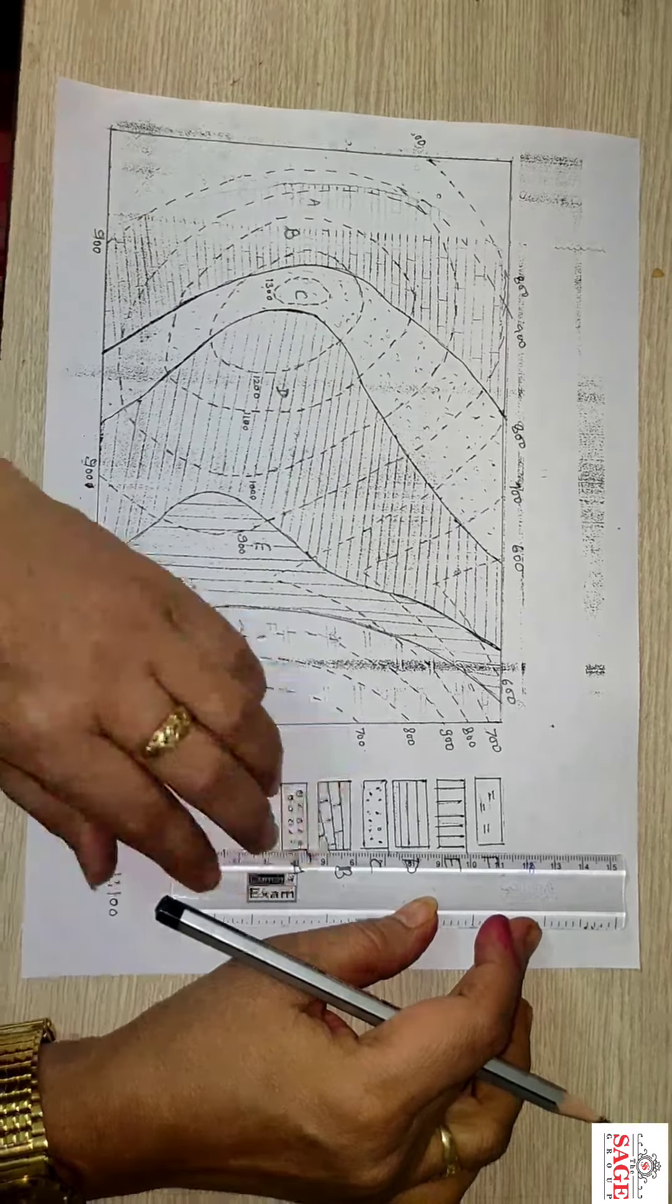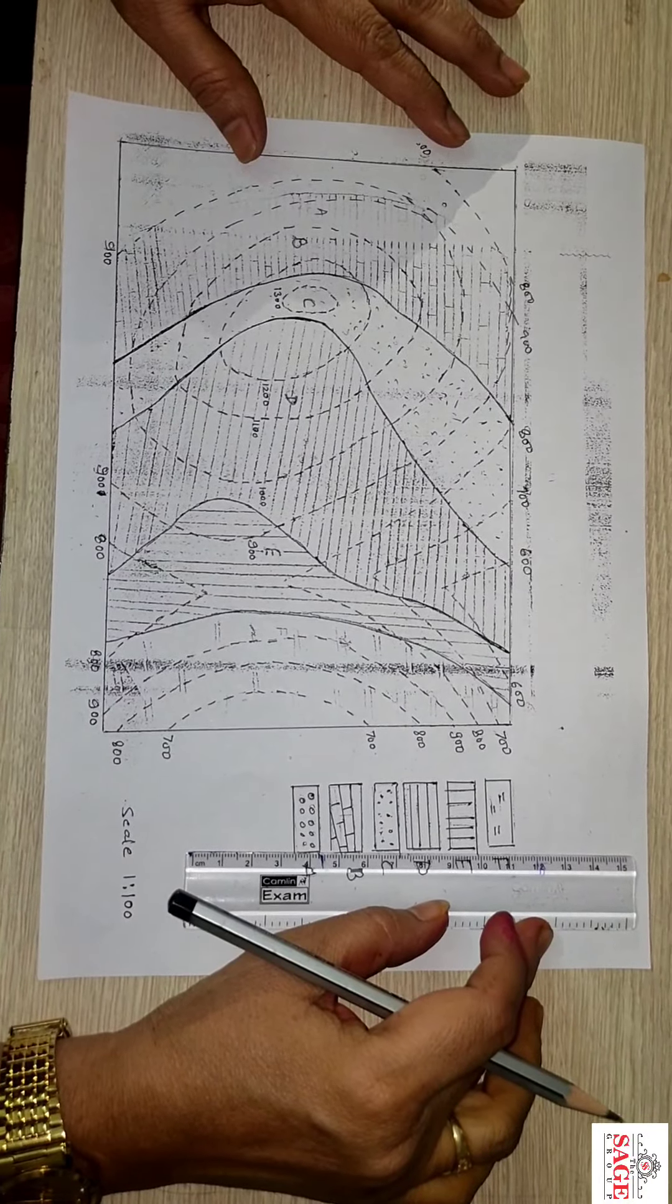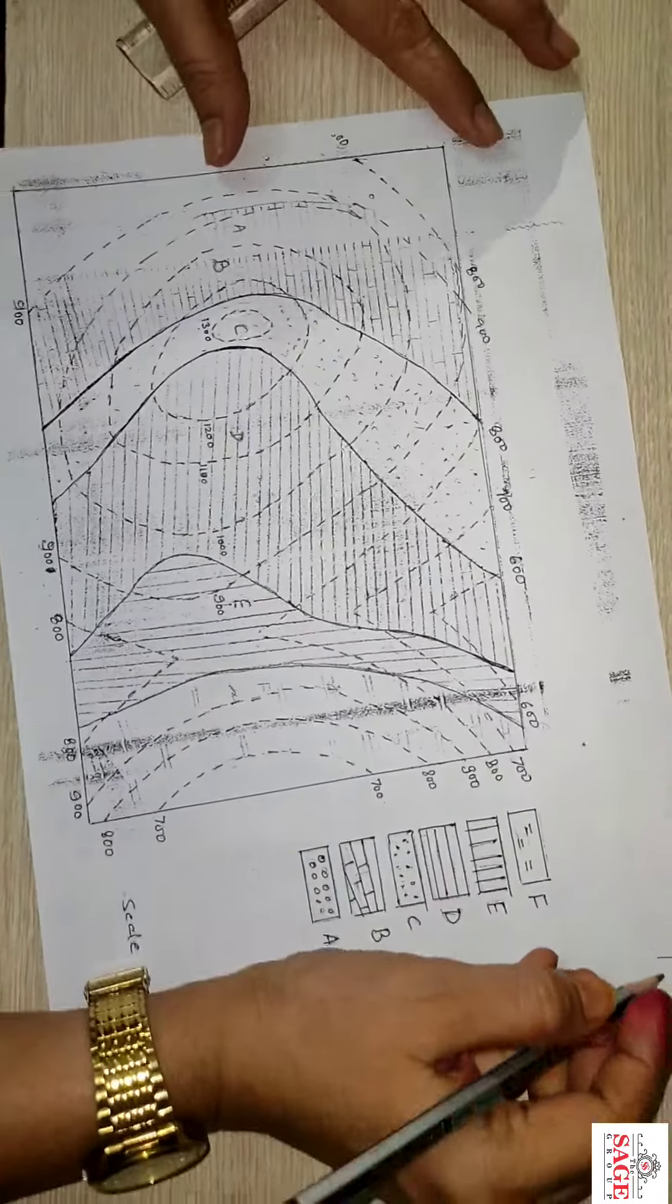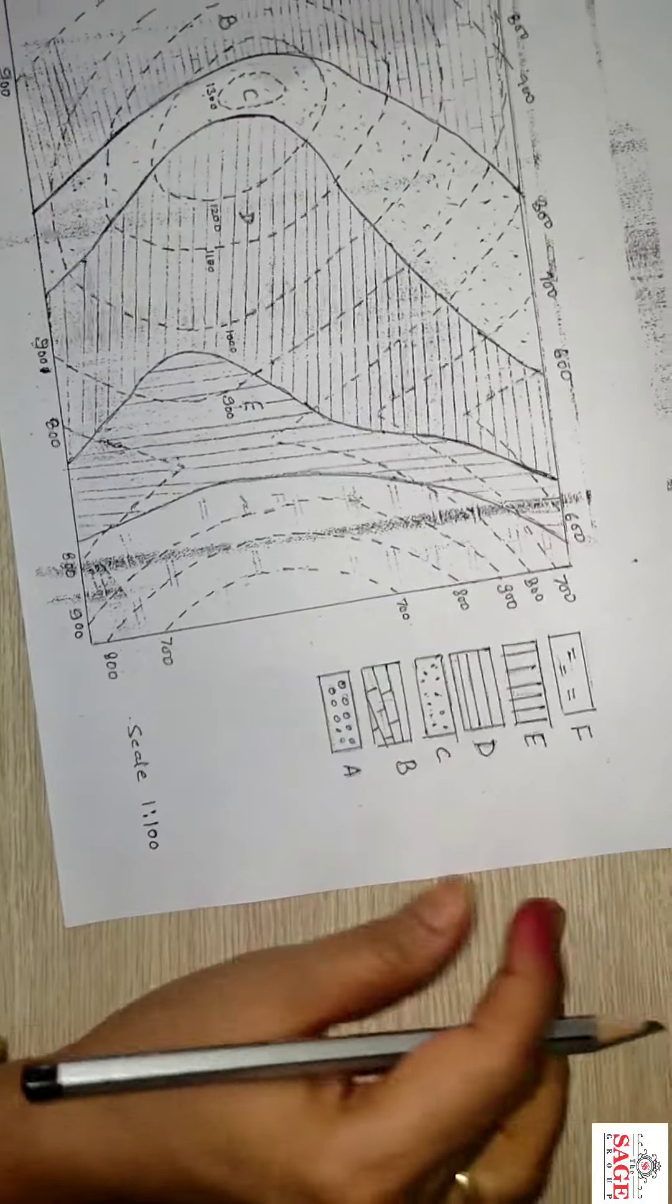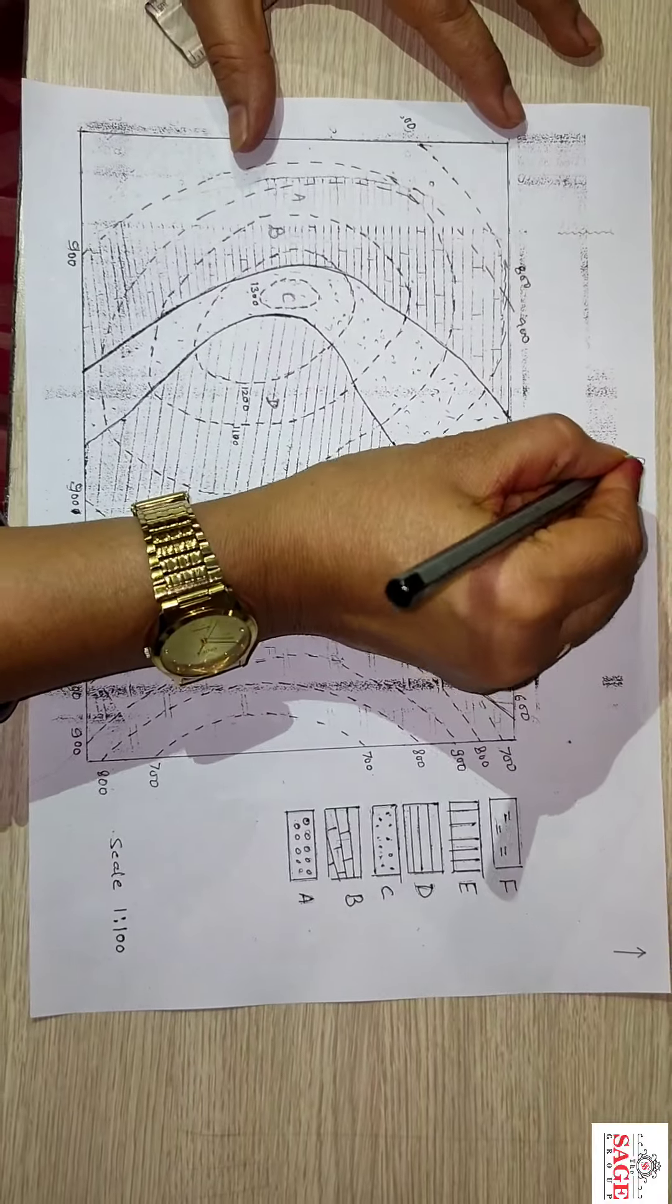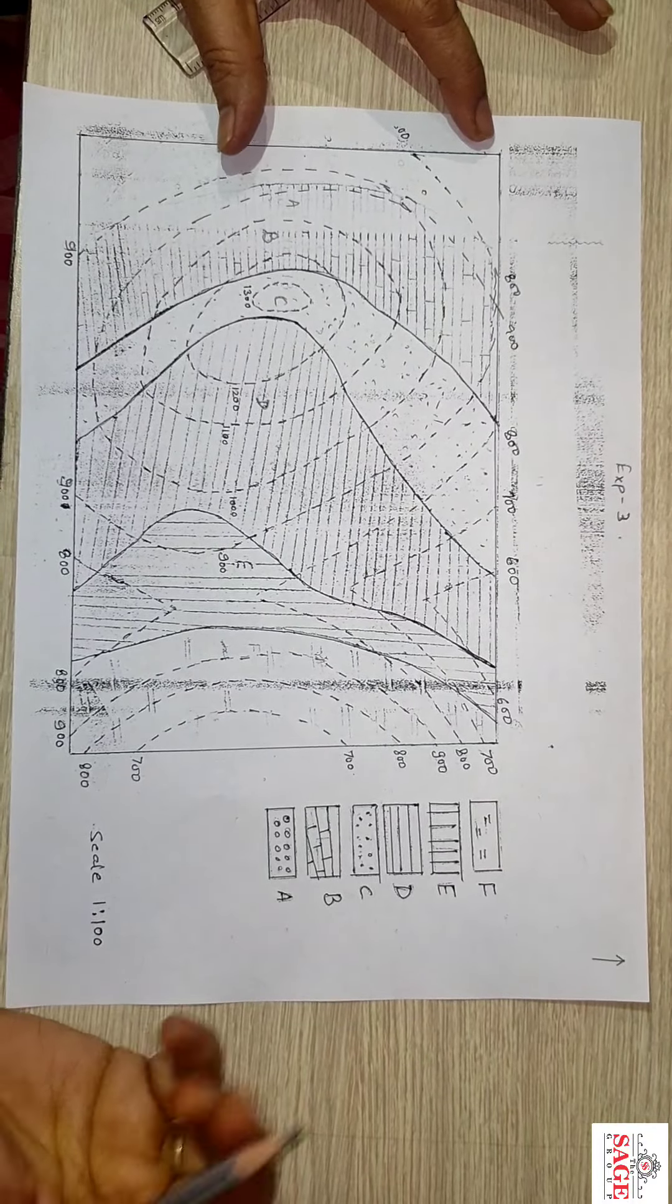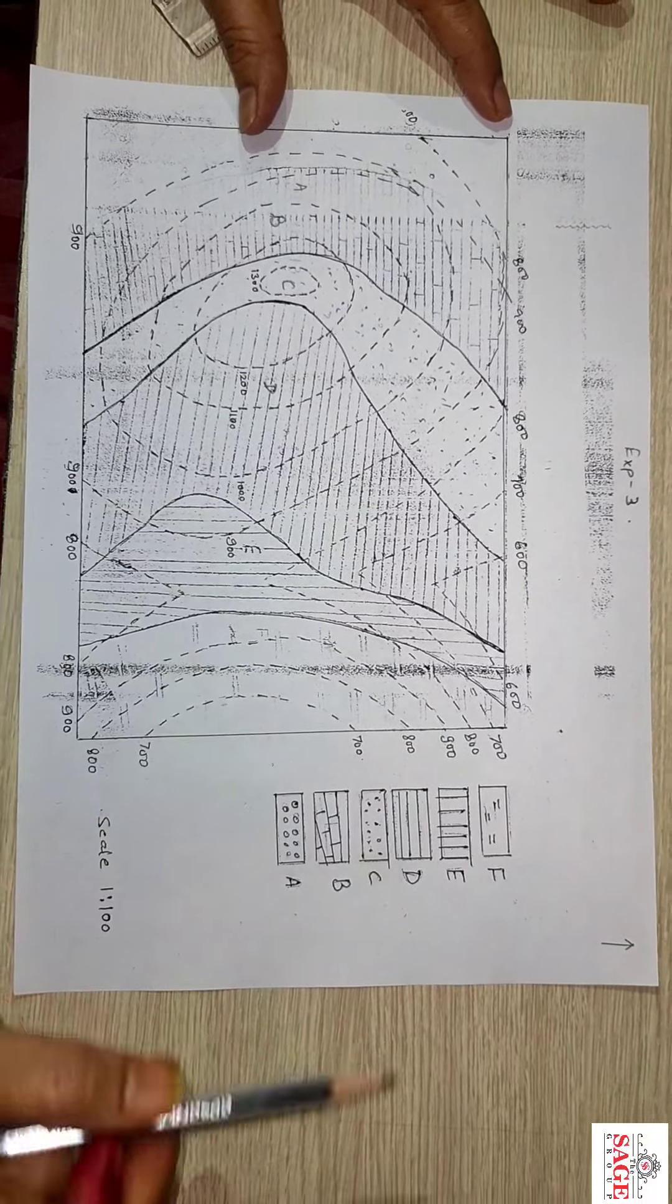This is a geological map and this is the exercise of our practical part of engineering geology CE405, and this is experiment number 3. In which the contours and the beds are found.